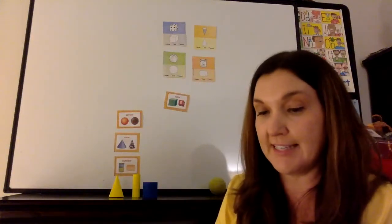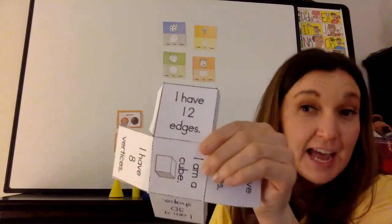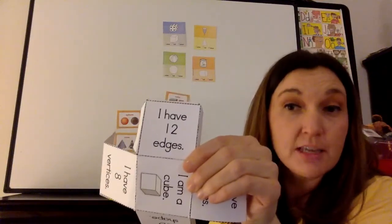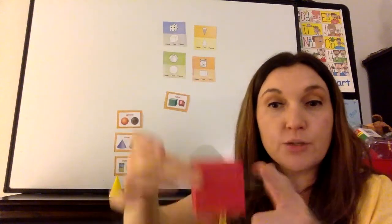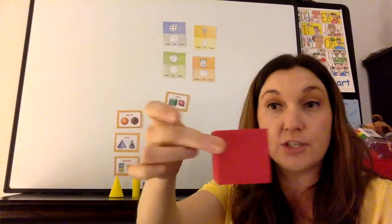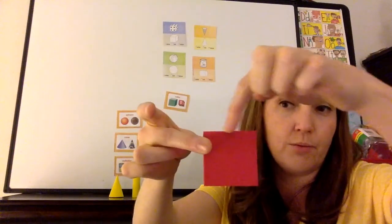We're going to learn something new. We learned faces. Now we're going to learn about edges. I have 12 edges. On a 3D shape, if you go along the side here where the two faces meet, that is called the edge.